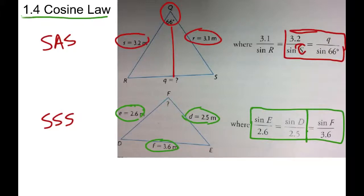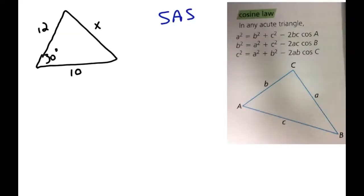So we're going to have to do something new, and what we use is the cosine law. Let's look at one example of each to see how to solve them using the cosine law. The first case we have is a triangle with side 12, side 10, and angle 30 in between them — that's our side-angle-side — and we're looking for side x.